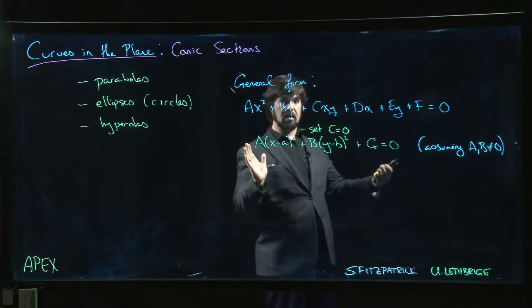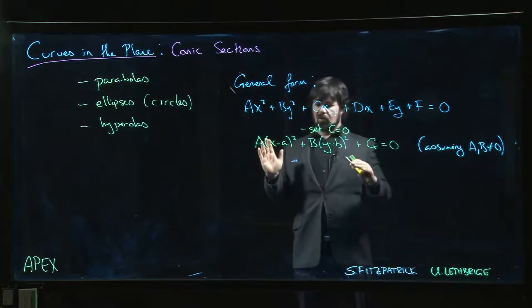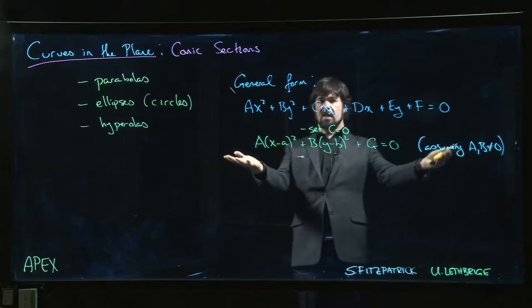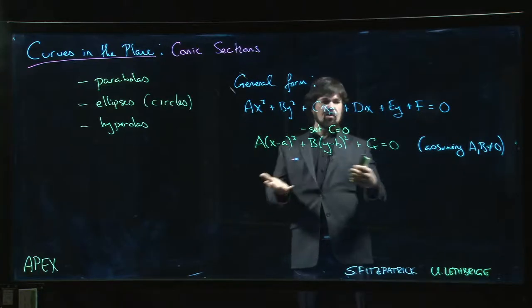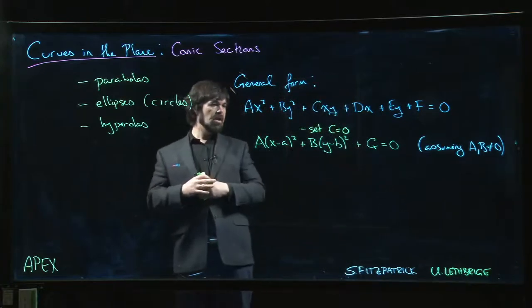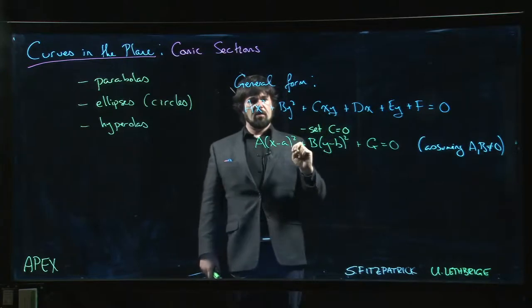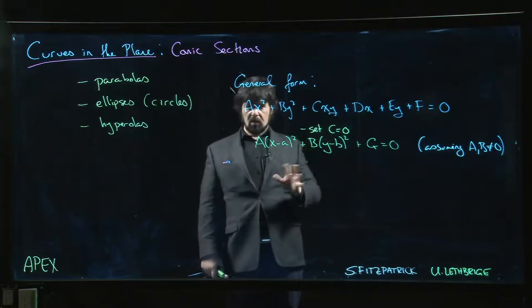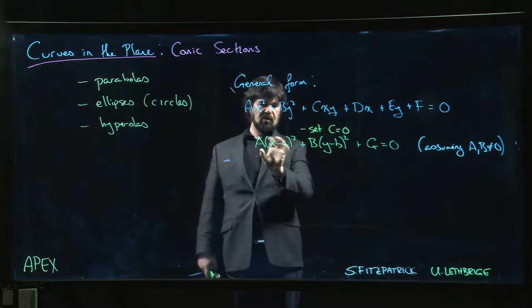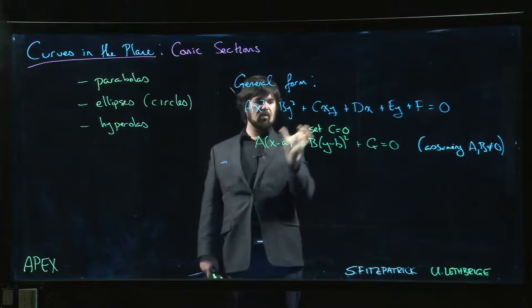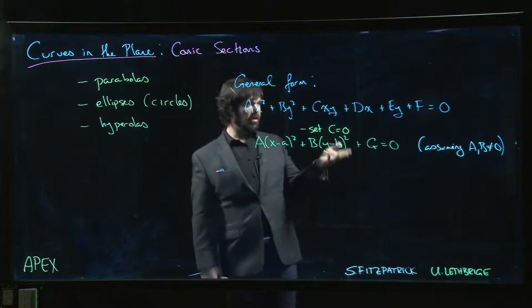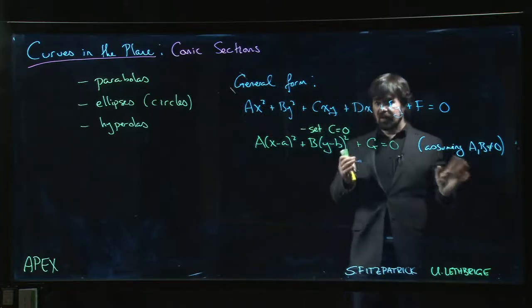So this is less general but not that much less general. What do you do with the missing cross term? Well, one of the things you can learn in a linear algebra course is that you can study what are called quadratic forms. You can study these using linear algebra and matrices and eigen values and eigenvectors, and you can show that in general if you have a cross term like this, there's always a change of variables that you can use to eliminate that cross term.